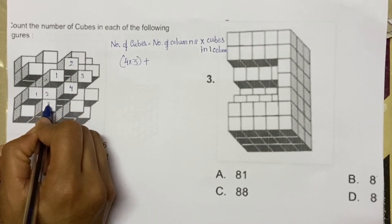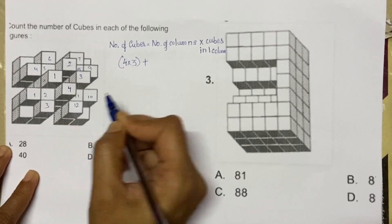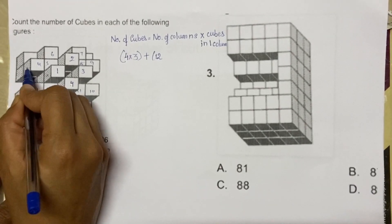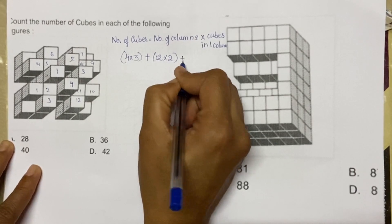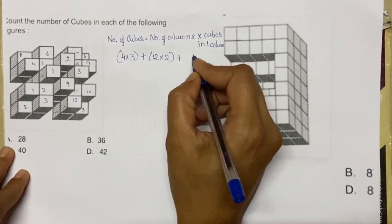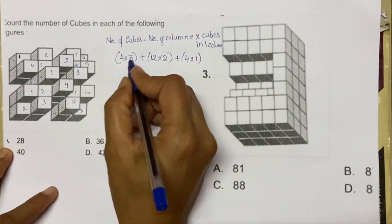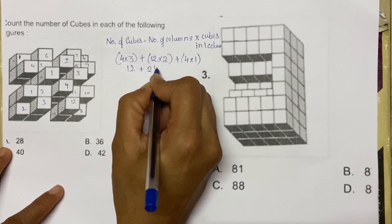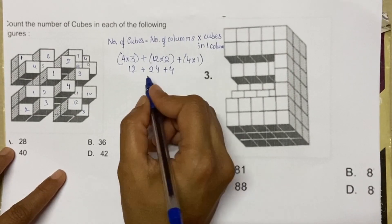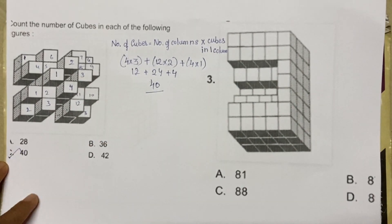Next, let's take this one: 1, 2, 3, 4, 5, 6, 7, 8, 9, 10, 11, 12 — so 12 columns with 2 cubes in each, so into 2. Plus this one: 1, 2, 3, 4 — so 4 columns with 1 cube in each column. So 4 into 3 is 12, plus 12 into 2 is 24, plus 4 into 1 is 4 — that's 36 plus 4, total 40. Option C is the answer.